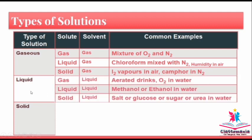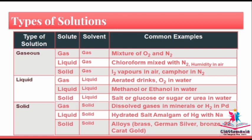In liquid solutions, the solvent is liquid. Gas in liquid — common examples are aerated drinks, oxygen in water. Liquid in liquid — for example, methanol or ethanol in water. Solid in liquid — for example, salt, glucose, sugar, or urea in water. In solid solutions, the solvent is solid. Gas in solid — dissolved gases in minerals, or hydrogen in palladium. Liquid in solid — hydrated salts, amalgam of mercury with sodium. Solid in solid — alloys, for example brass, german silver, bronze, and 22 karat gold.